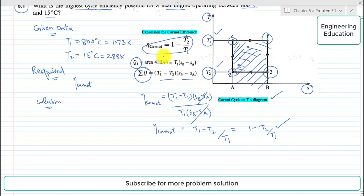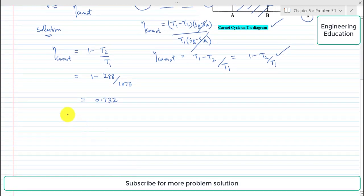So using this expression of Carnot cycle efficiency, 1 minus T2 by T1, so it will become 1 minus T2 is 288 Kelvin and T1 is 1073 Kelvin. So if we simplify this you will get 0.732.